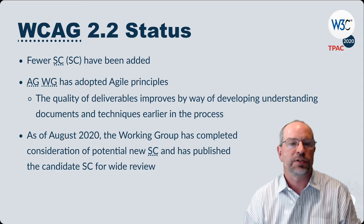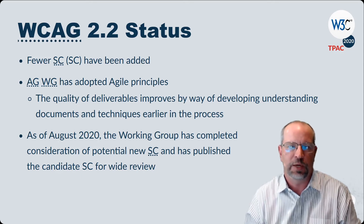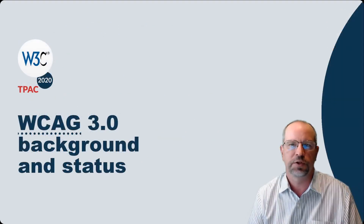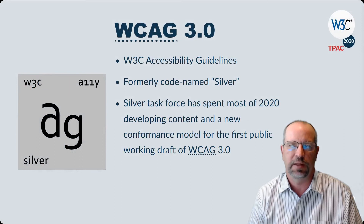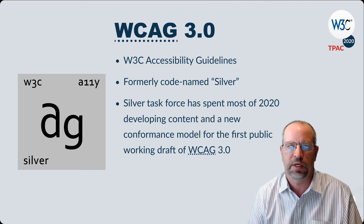As of August 2020, the working group has completed consideration of potential new success criteria and has published the candidate success criteria for wide review. The newest version of W3C Accessibility Guidelines, or WCAG 3.0, was formally codenamed Silver. The Silver Task Force has spent most of 2020 developing content and a new conformance model for the first public working draft of WCAG 3.0.